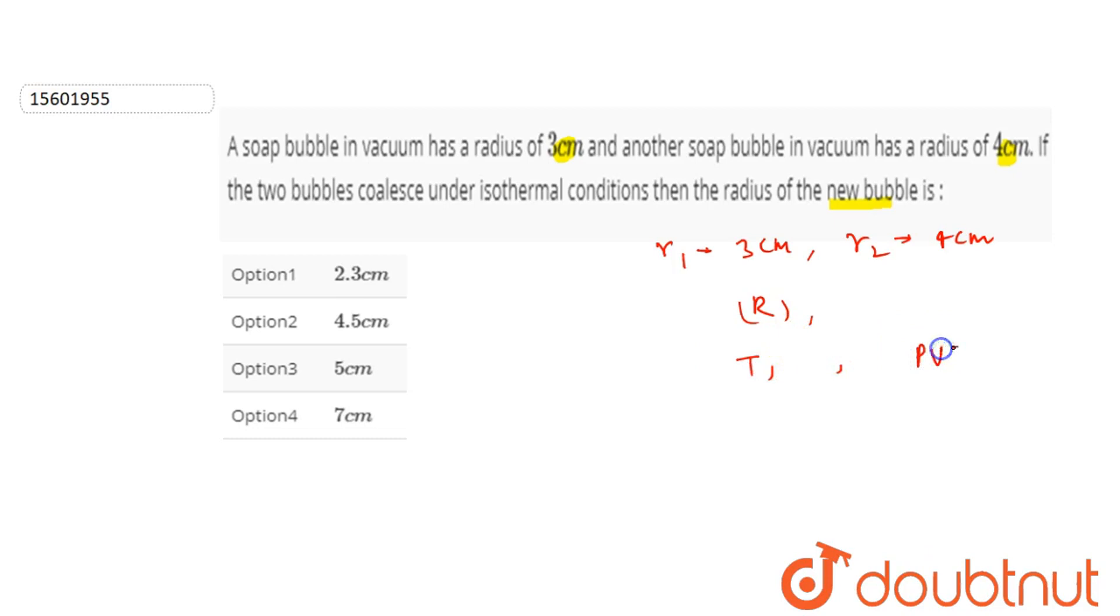Then we are going to use PV is equals to NRT. So T will be constant. Okay? So what are we talking about? Here we are going to use the formula.